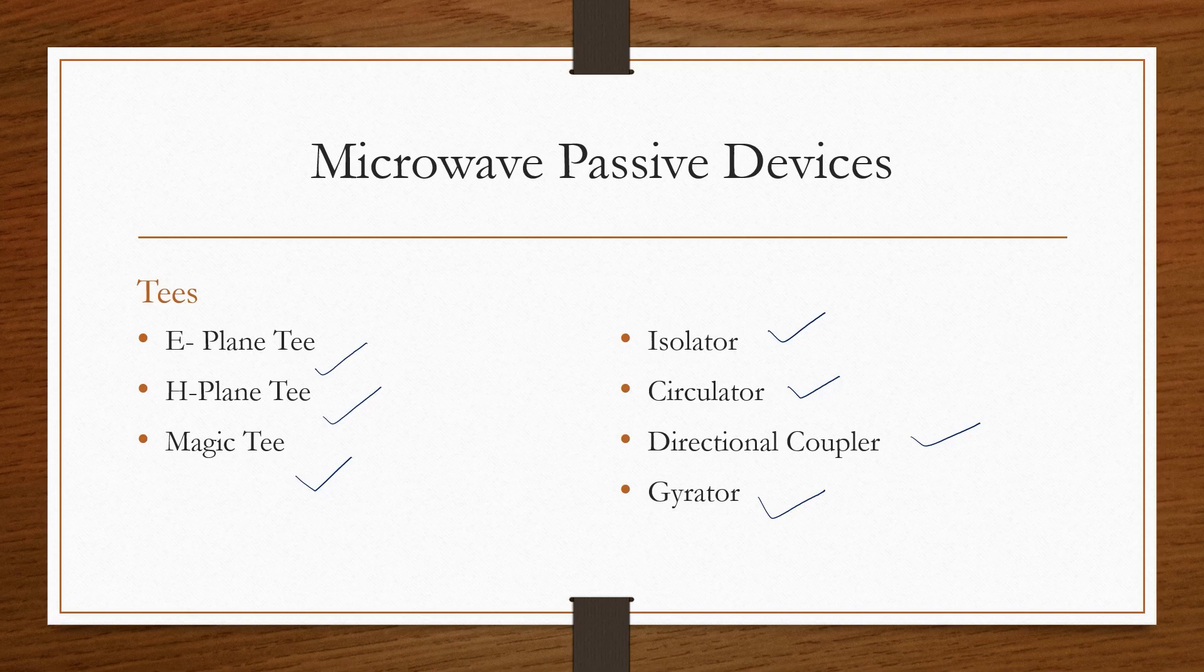Now what is T? So T is a junction where we can combine more than two waveguides. By definition, the passive devices are components where we can interact microwave signals without requiring an external power source.